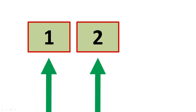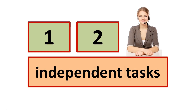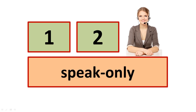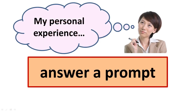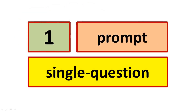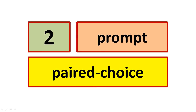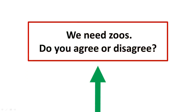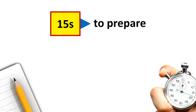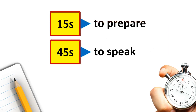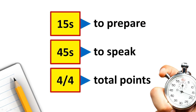Speaking tasks 1 and 2 are independent tasks. Both are speak-only tasks. These tasks measure your ability to answer a prompt using your personal experience. For task 1, the prompt is a single question prompt — for example, 'TV is good for children. What is your position?' For speaking task 2, the prompt is a paired choice prompt — for example, 'We need zoos. Do you agree or disagree?' For both tasks, you will have 15 seconds to prepare your response and 45 seconds to speak. Both tasks are scored out of four total points.